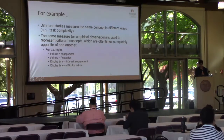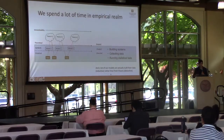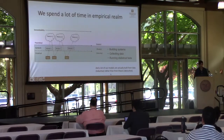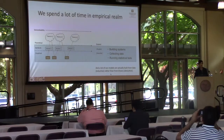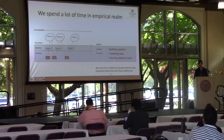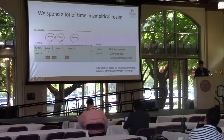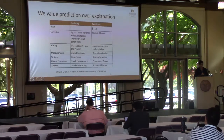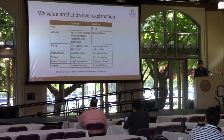That's where the theory part starts coming in. We do spend a lot of time at the empirical level — we do a great job of building systems, collecting data, and running statistical tests. But those models at the symbolic level are built from the bottom up as opposed to the traditional top-down approach. We also value prediction over explanation, which is fine, but that's going to make it difficult to accommodate and develop theory.